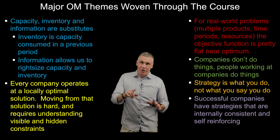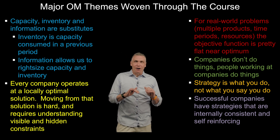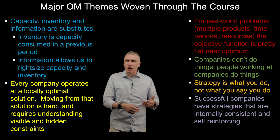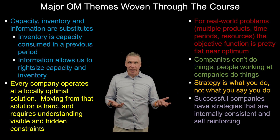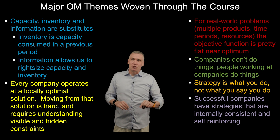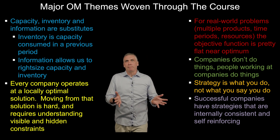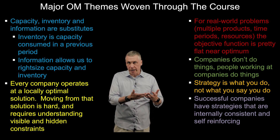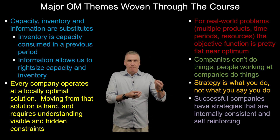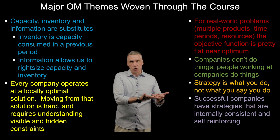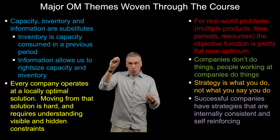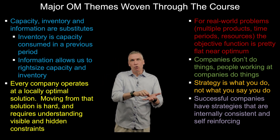For real-world problems, the objective function is actually flat around the area of the optimal solution when there are multiple products, time periods, and locations. When you're setting inventory policy for multiple items rather than just one, along with the best optimal solution, there are several near-optimal solutions. This is beneficial because it means we don't have to move to one mythical point, but to a region — and that's easier to achieve.